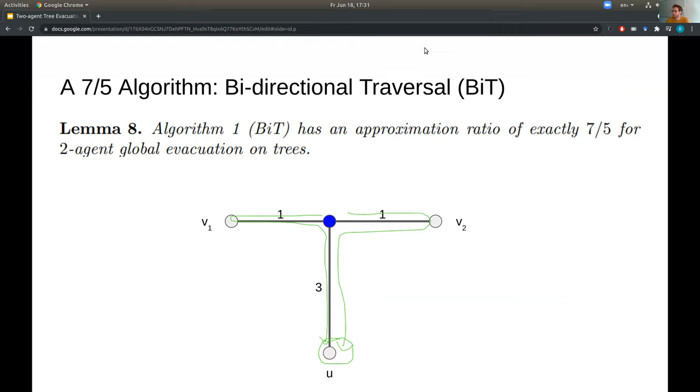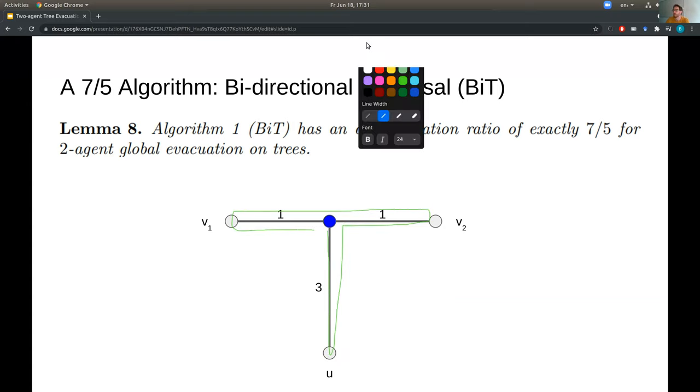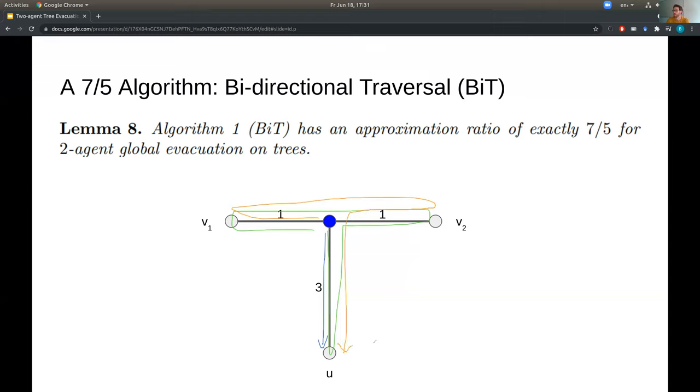Whereas if we use BIT, then it takes some traversal of the graph, but this traversal could be U, and then V2, and then V1, and back to the start. And now if the agents go along this traversal in opposite directions, then one robot reaches U at time 3, and the other one reaches V2 at time 3. And if the exit is in either of these locations, let's say it's U, then the second agent has to now head all the way back down there, leading to an exit time of 7.